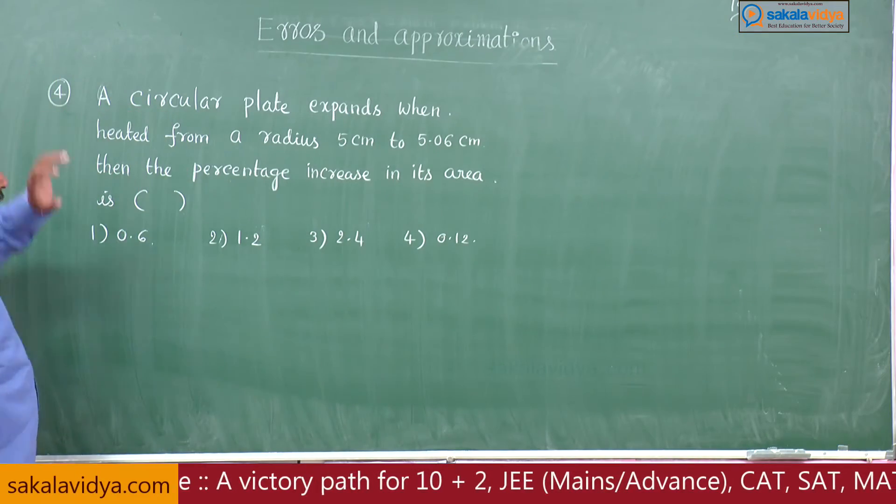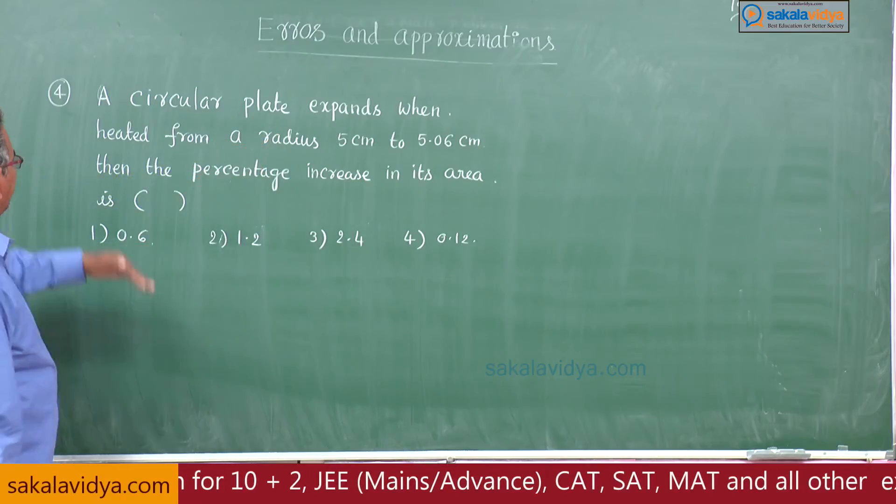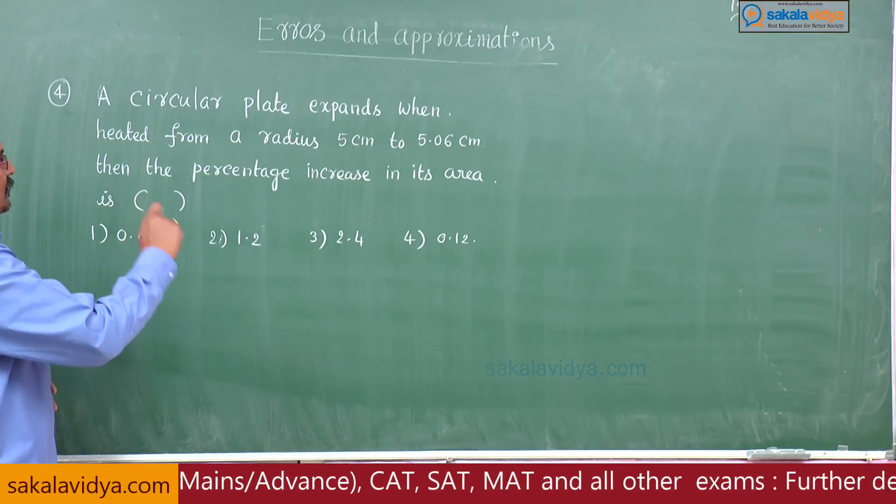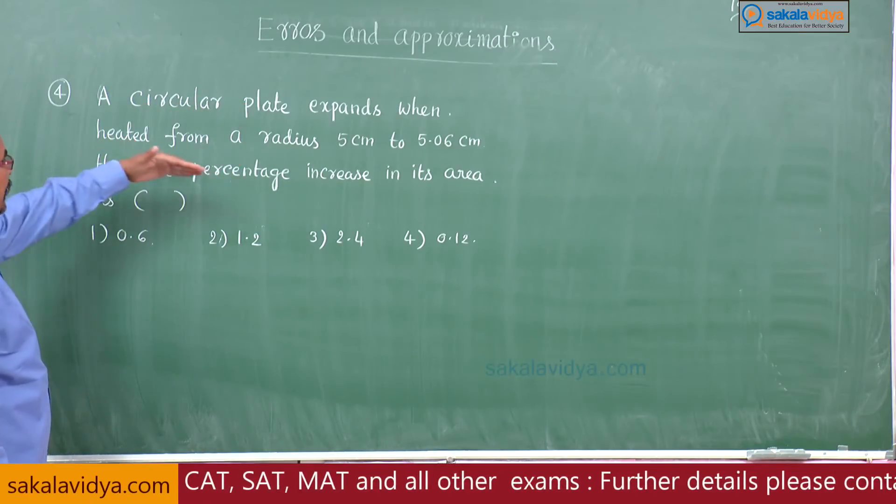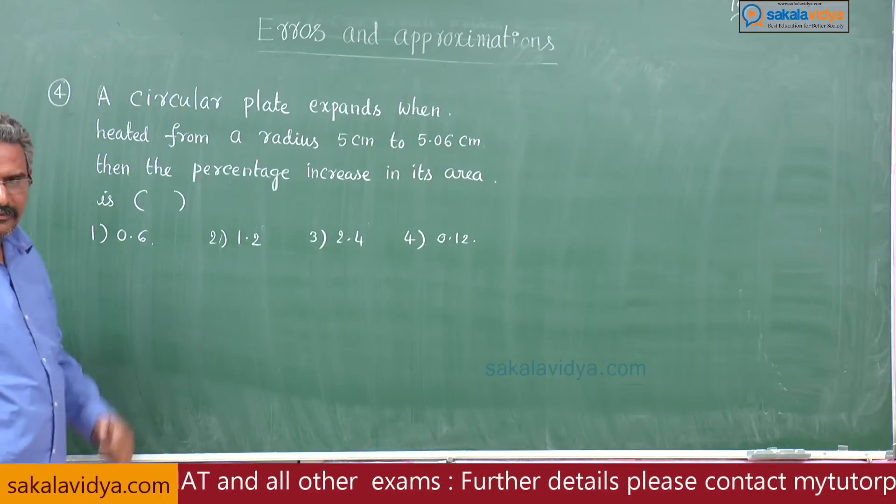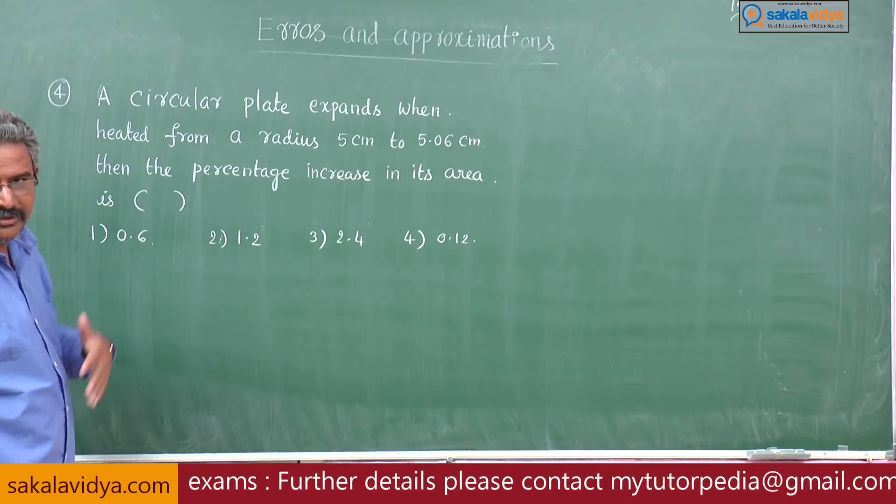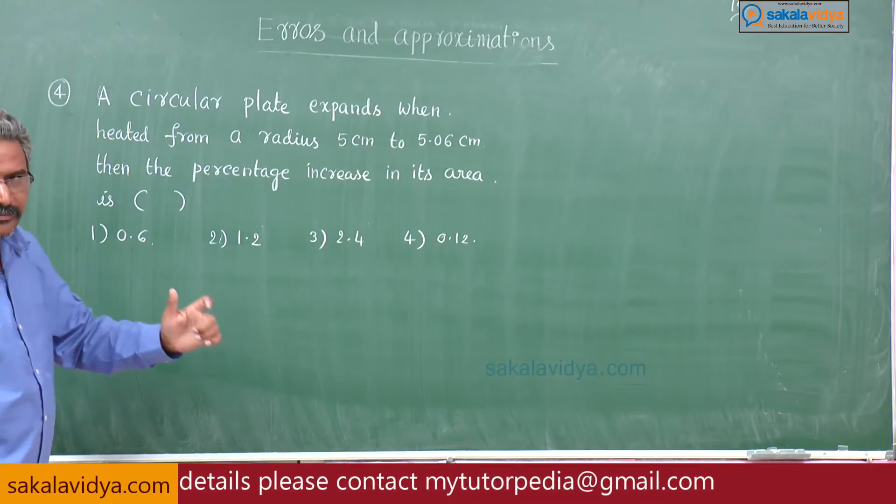This is the fourth problem. A circular plate expands when heated from a radius 5 centimeters to 5.06 centimeters, then the percentage increase in its area: first option 0.6, second option 1.2, third option 2.4, fourth option 0.12.